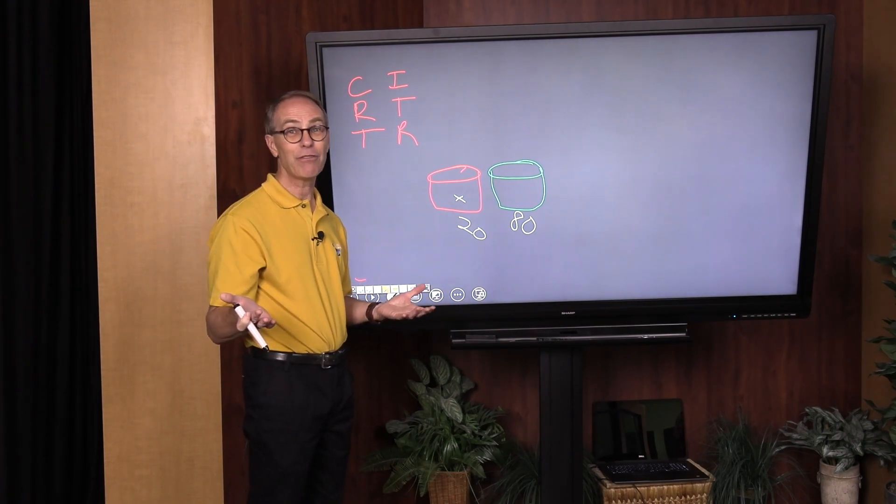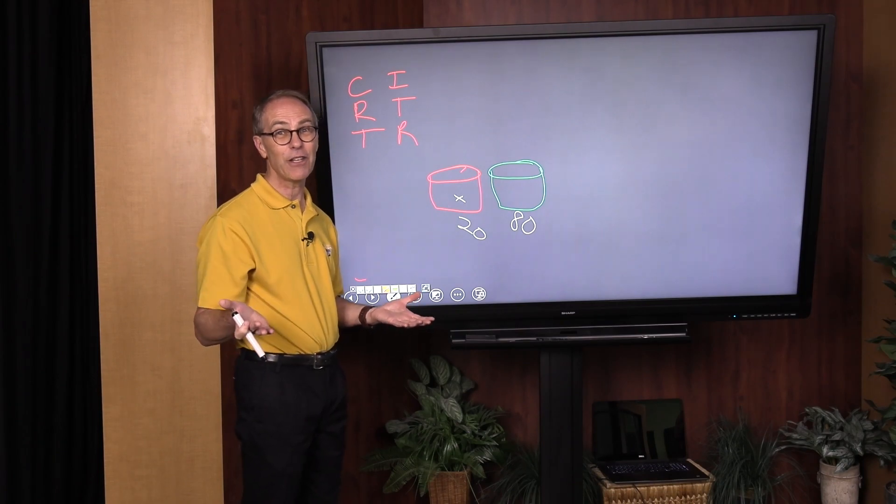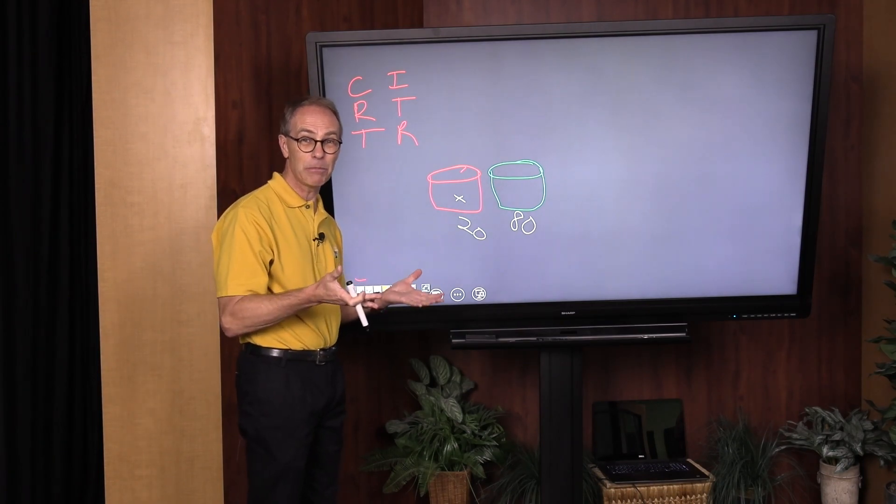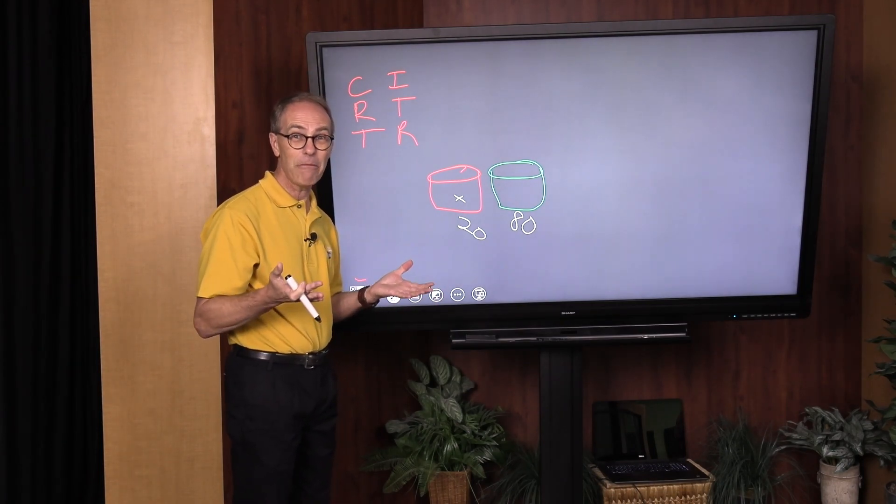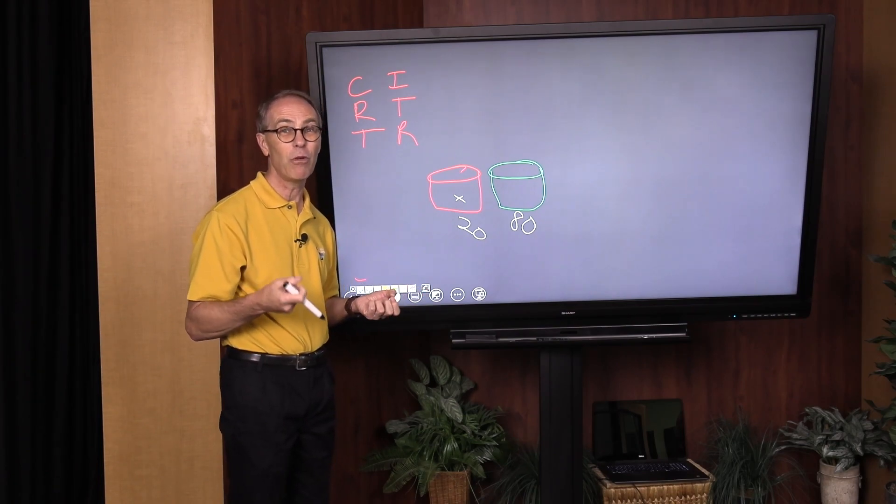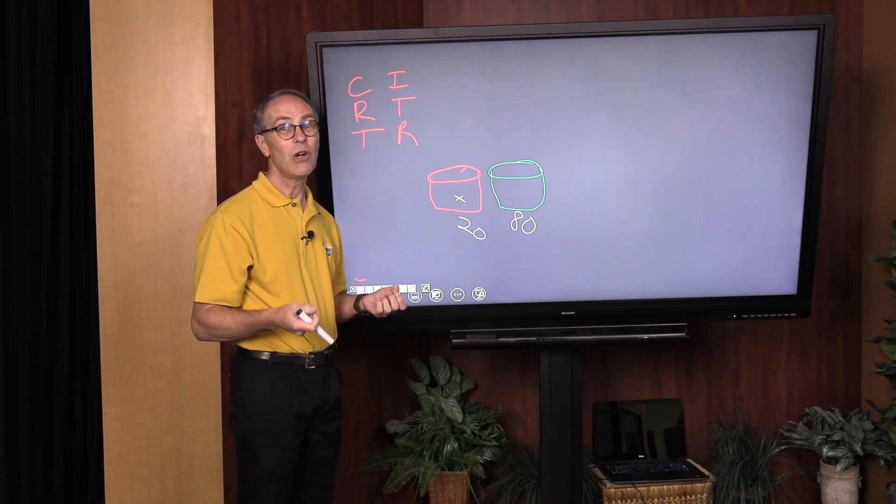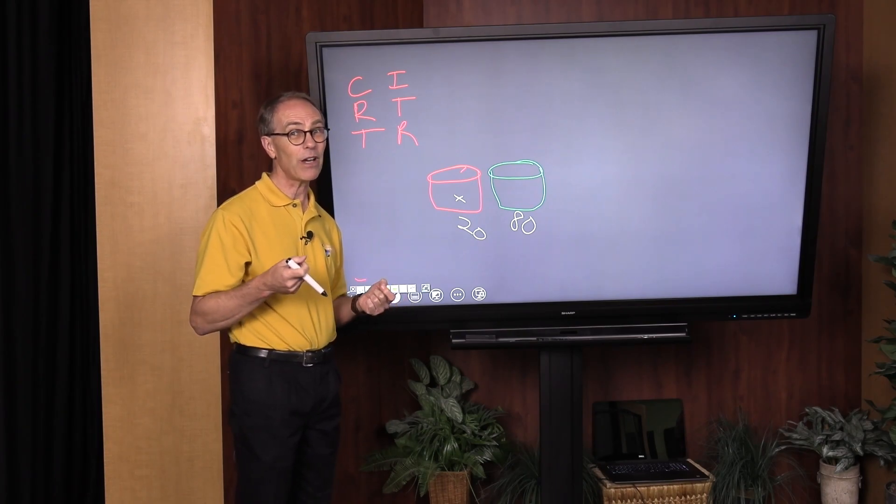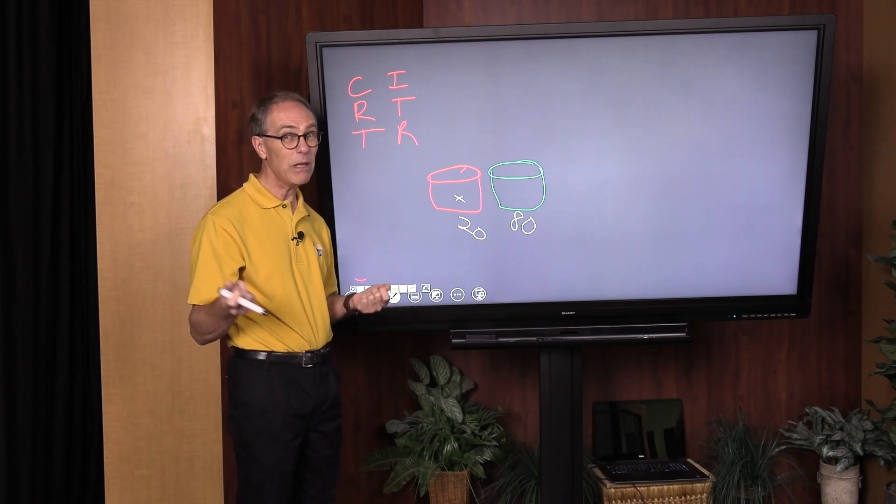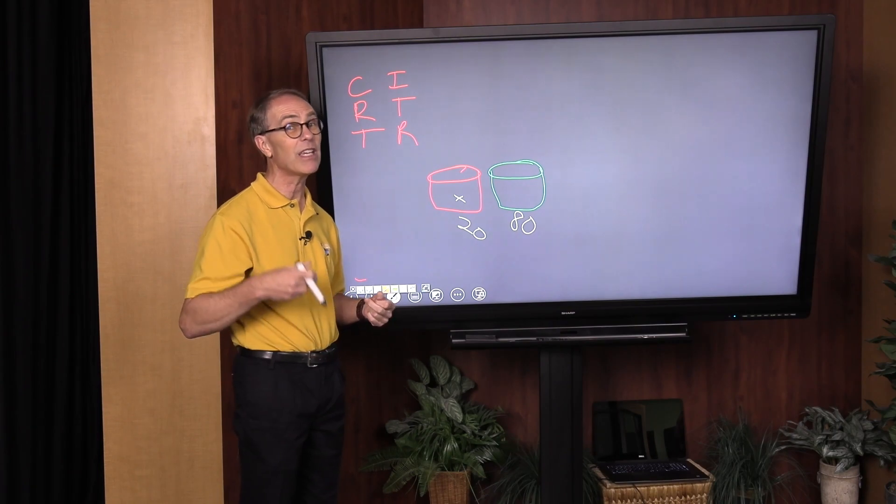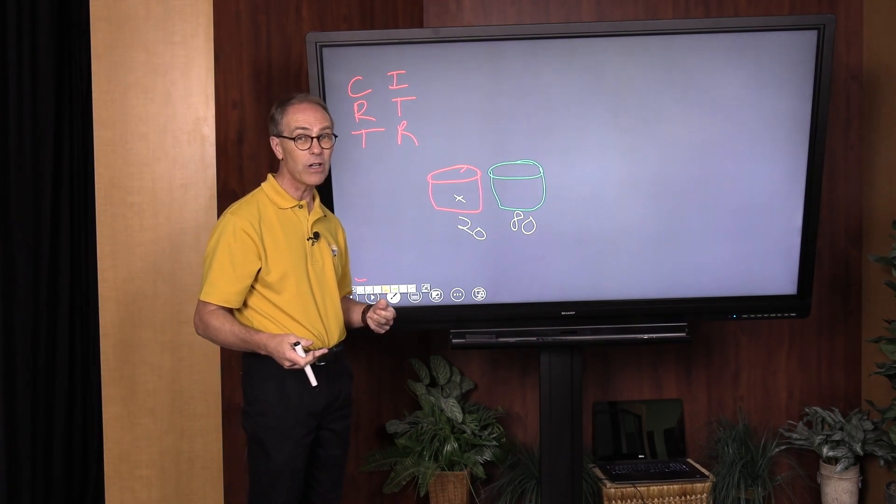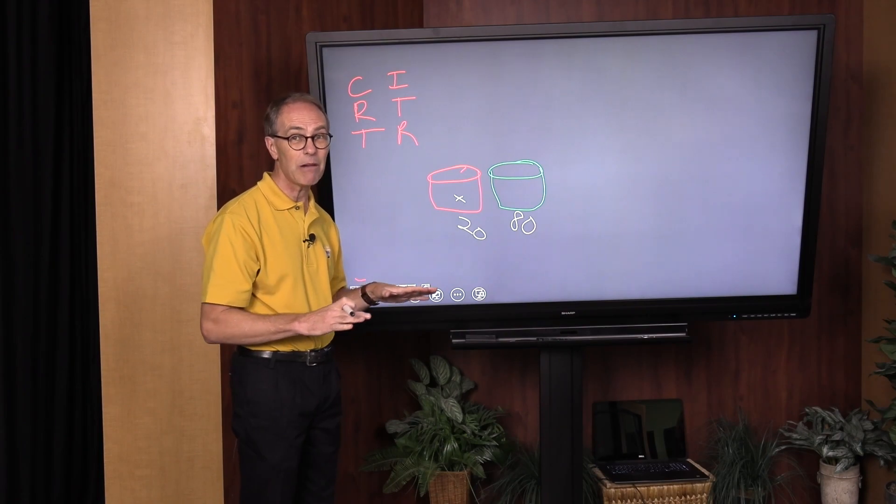Now, what happened was this: the rats ended up getting more rewards than the humans. Why? Because there was no pattern. Even after the experiment was over, they found that the people in the experiment swore that they saw a pattern, yet there was no pattern. What can we learn from this? When we look at stock markets and we try to figure out where they're going to go next, we may think we see patterns.